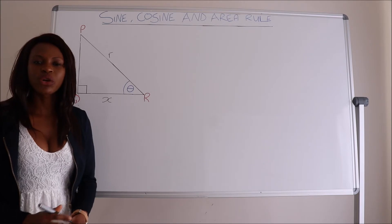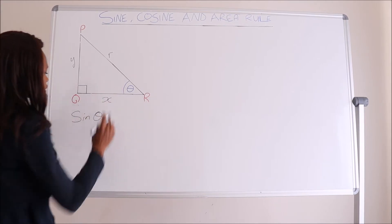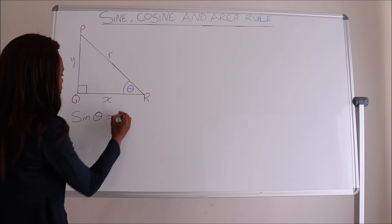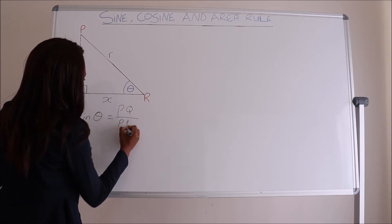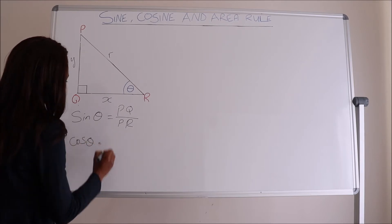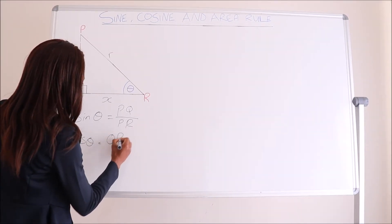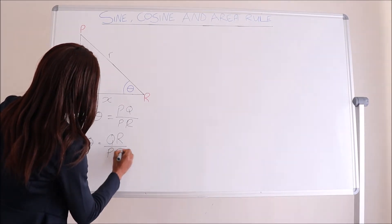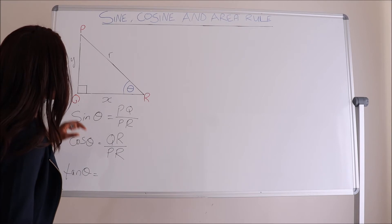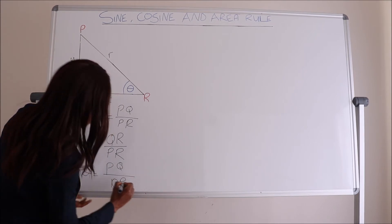With trigonometric ratios, we are talking about sine, cosine, and tangent. Starting with sine: sine theta is equals to the opposite over the hypotenuse, which for this triangle is PQ divided by PR. For cosine of theta, it is equals to the adjacent over the hypotenuse, which is QR divided by PR. And our tan of theta is equals to the opposite over the adjacent, which for this triangle is PQ divided by QR.